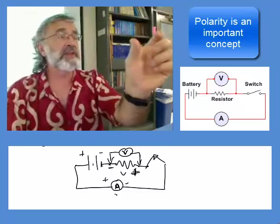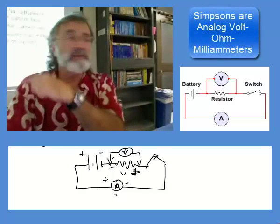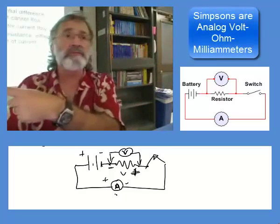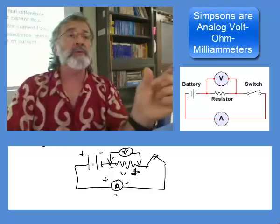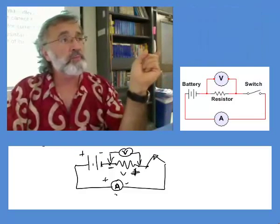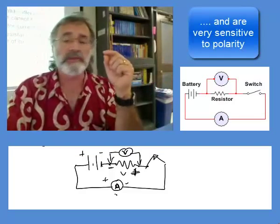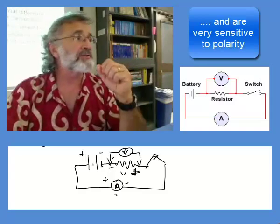In order to say that, it's a negative in here. In those Simpsons, the black volt-ohm milliamp meter, you put that in backwards, the needle will try to go past zero and you bend your needle, and forever more people laugh at you because you have a bent needle.